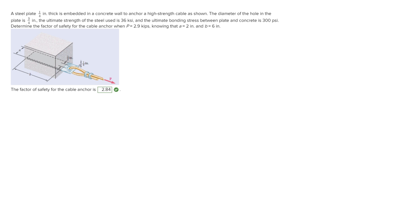For this problem, we're told that a steel plate that is a quarter inch thick is embedded in a concrete wall to anchor a high strength cable. The diameter of the hole in the plate is three quarters inch. The ultimate strength of the steel is 36 ksi, the ultimate bonding stress between the plate and concrete is 300 psi. We are asked to determine the factor of safety for the cable anchor when P equals 2.9 kips, knowing that a equals 2 inches and b equals 6 inches.